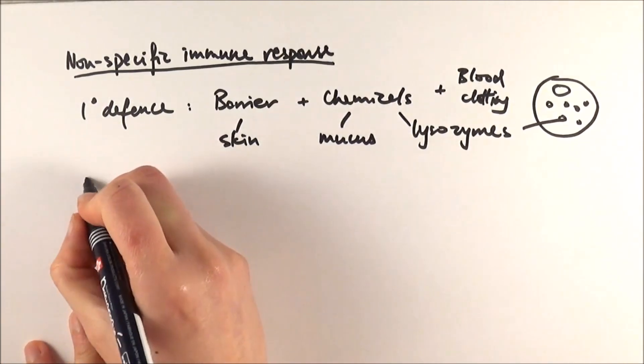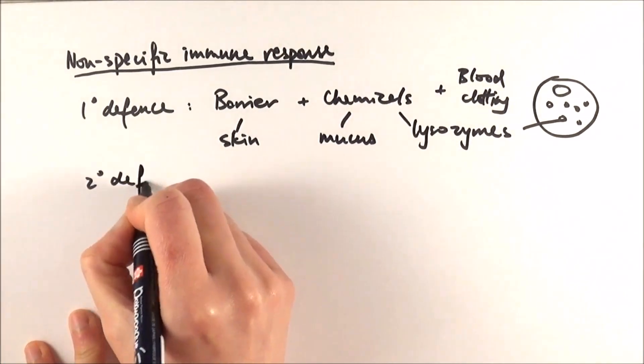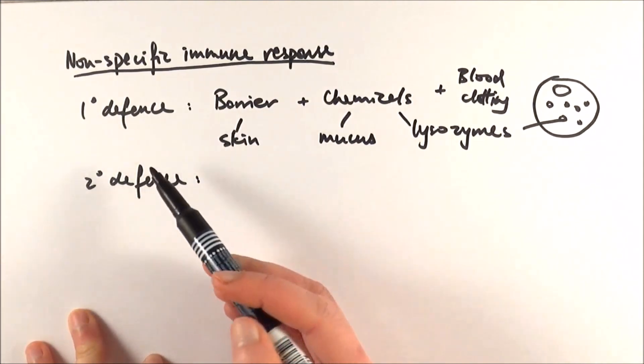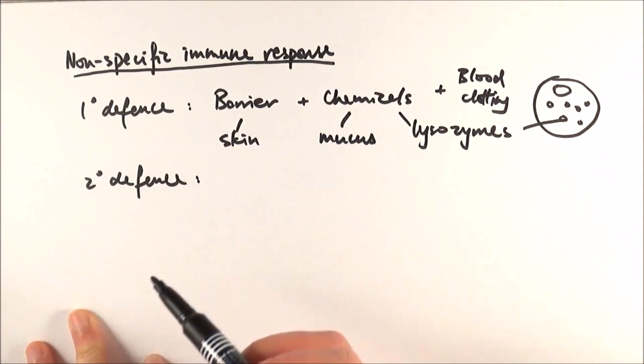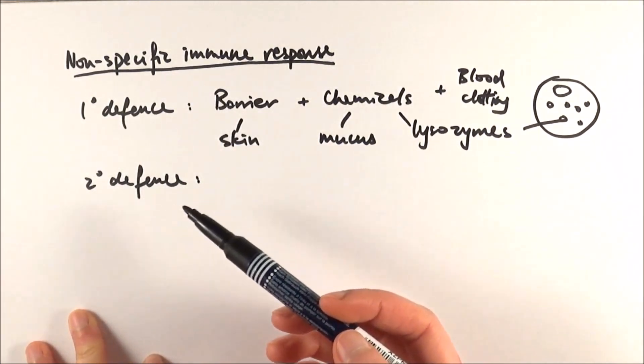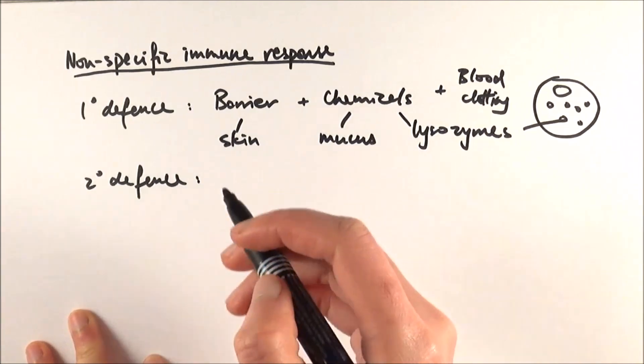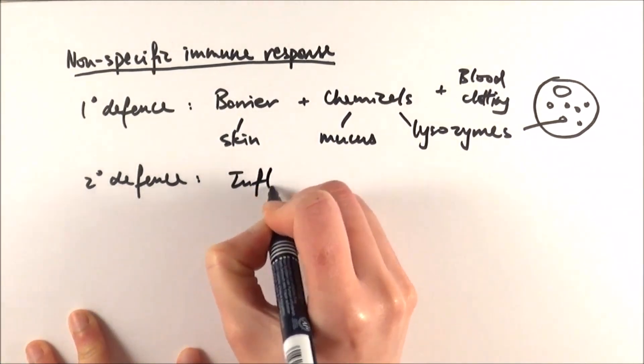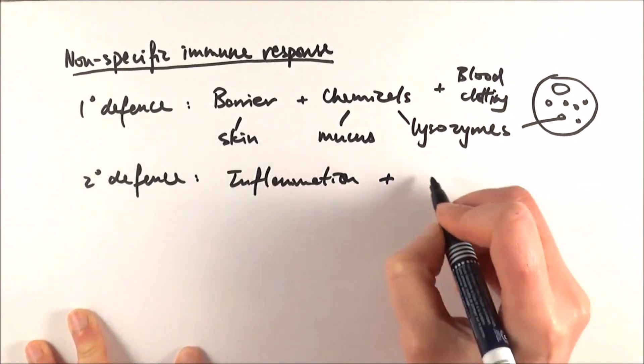That's the primary defense, and then we've got our secondary defense, which is pretty much when pathogen has entered our system. What does the body do to respond to that? In the non-specific secondary defense or immune response, we'll mainly focus on two things: inflammation and phagocytosis.